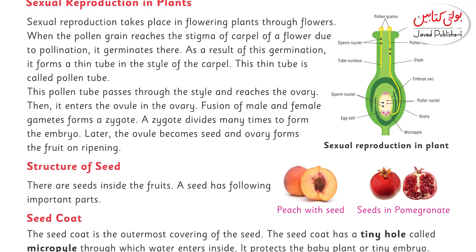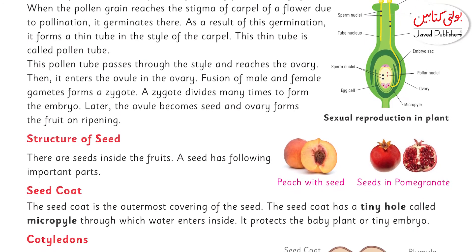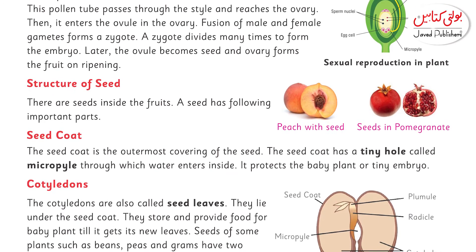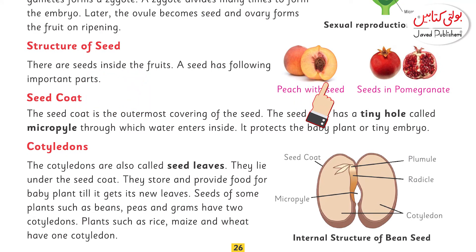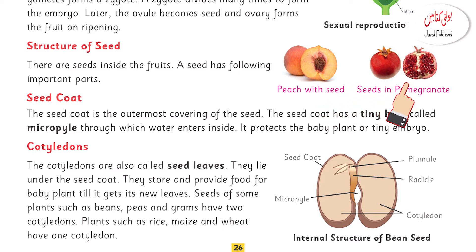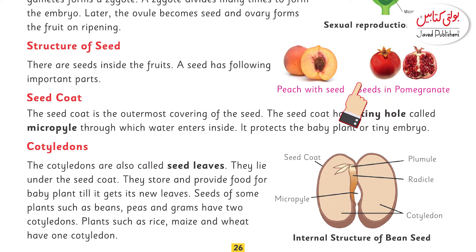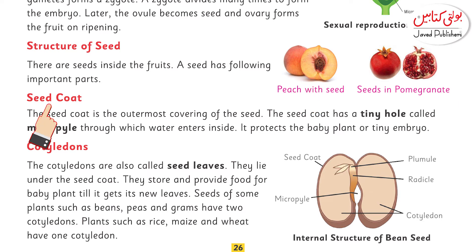Now let's talk about the structure of the seed. What is the structure of the seed? What are the parts present in it? There are seeds inside the fruits. You eat peach, you eat pomegranate, you eat fruits, and you can look at different seeds. The first part is the seed coat.